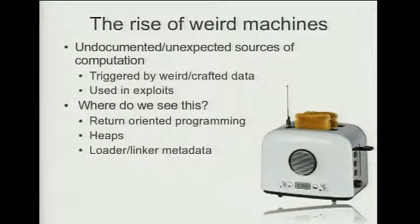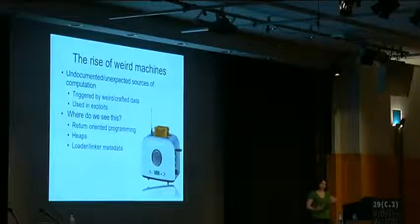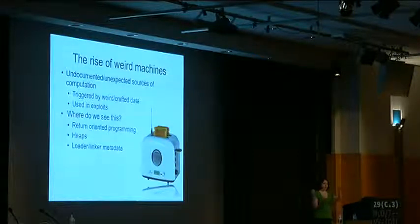What is a weird machine? They've always existed but weren't necessarily named. They're just undocumented, unexpected sources of computation in some target — in an executable, embedded hardware, or whatnot. They're everywhere, and they can be triggered by weird or crafted data, or sometimes by code. I'm focusing on data, and they're often used in exploits. Return-oriented programming is a weird machine: you craft a stack and suddenly you're executing something unexpected — just because of how things are laid out in memory, you end up crafting some weird computation.